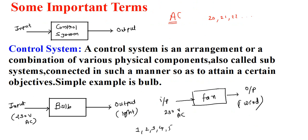To summarize: the basic definition of a control system is an arrangement or combination of various physical components, also called subsystems, connected in such a manner so as to attain a certain objective. Two examples given are an electric bulb and a fan. You can also consider electric motors and air conditioners as examples. For a fan, giving input of 230 volt AC causes it to rotate, and the output is wind.